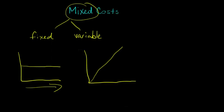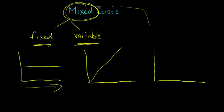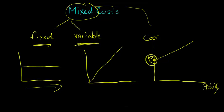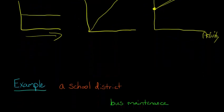With mixed costs, we've got components of both fixed and variable costs. Sometimes people call mixed costs semi-variable costs. The way they behave is we have a fixed component — so instead of starting at zero, our cost starts at some base level. Then as the activity level changes, the cost goes up from there. It's actually easier to just walk through an example to make it a little easier to understand.